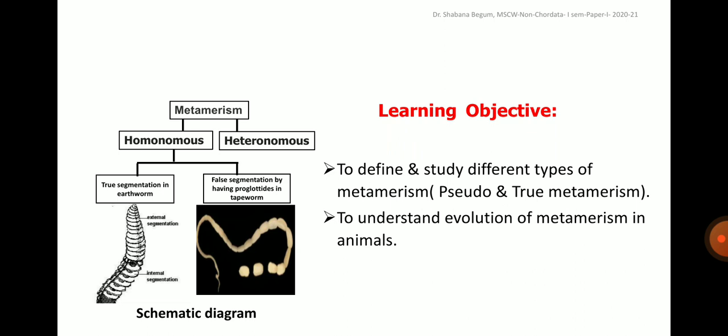Here in this particular slide, if you keenly observe, the schematic diagrams of metamerism and its types are given. The word metamerism is divided into two types, mainly homonomous and heteronomous. They are also called as complete and incomplete metamerism. Under homonomous metamerism, again two more blocks are seen, which are true metamerism and pseudometamerism, which we will be drilling in detail a little later.